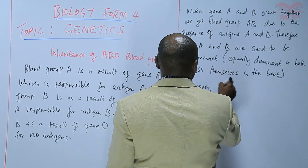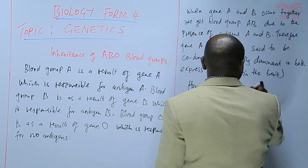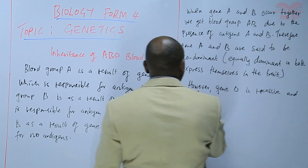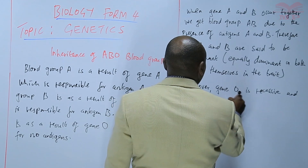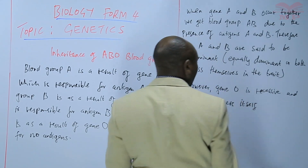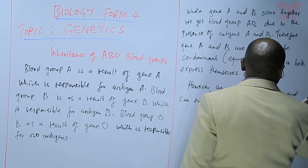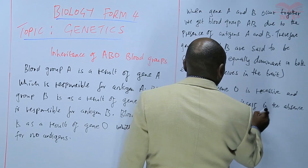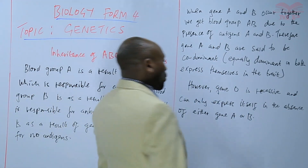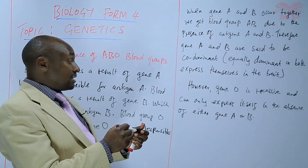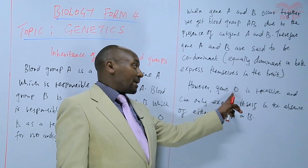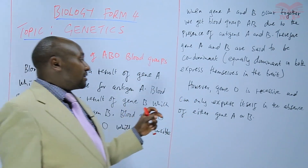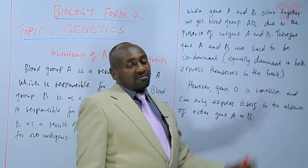However, gene O is recessive and can only express itself in the absence of either gene A or gene B. The only time O expresses itself is when A and B are absent. If A is present, we get blood group A even when O is there. When B is present together with O, we get blood group B. So O can only express itself in the absence of both A and B — that is why it is a recessive gene.